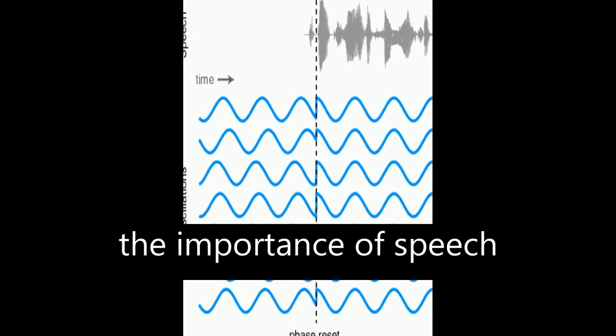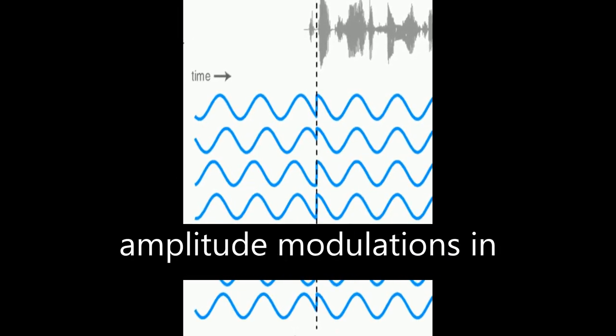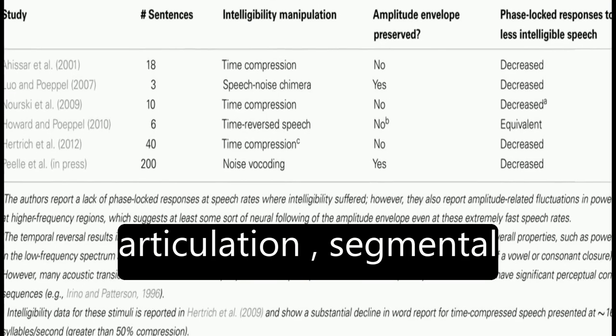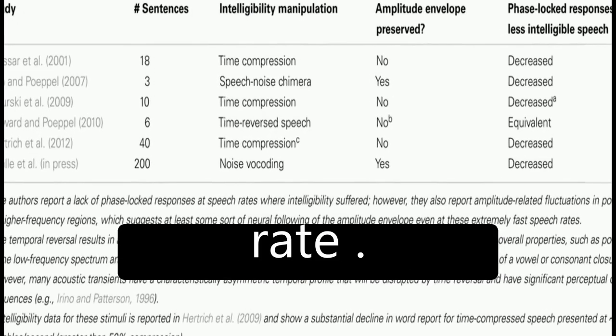The article discusses the importance of speech rhythm and how it is conveyed through amplitude modulations in speech. These modulations contain important markers for place and manner of articulation, segmental information, and speech rate.